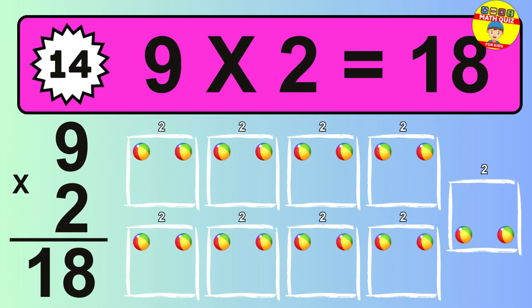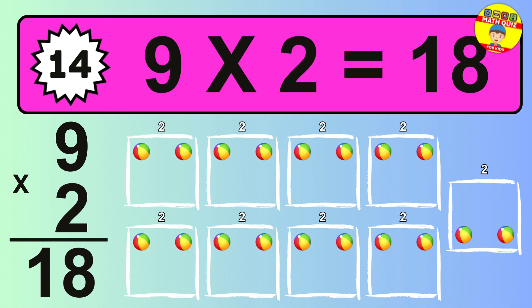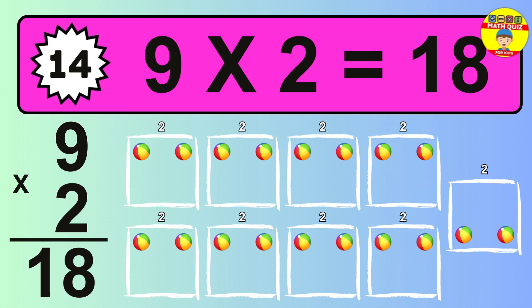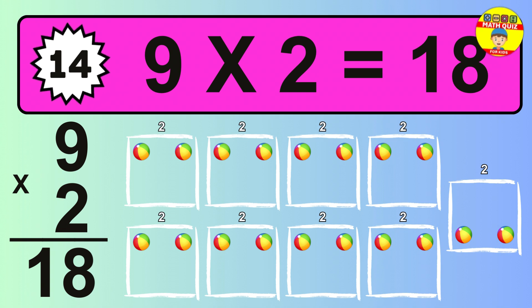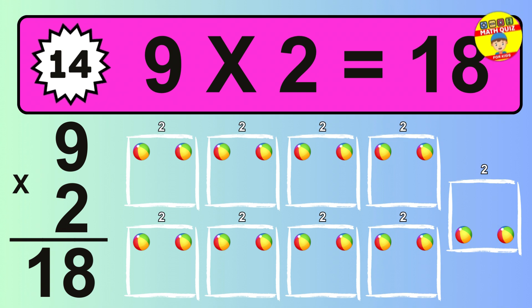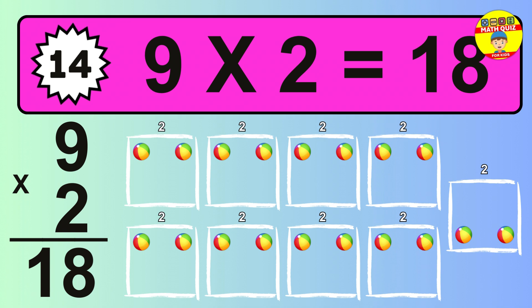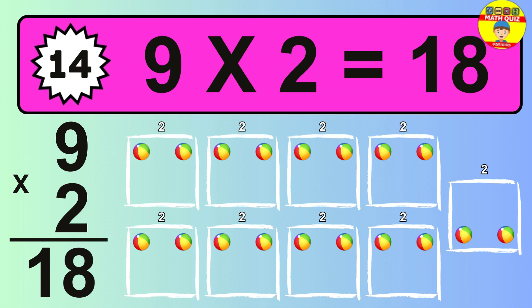The answer is 9 times 2 is 18. To calculate, we have 9 groups with 2 balls each one. So, how many balls do we have? 18 balls.